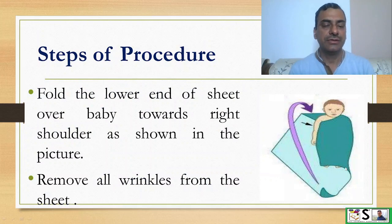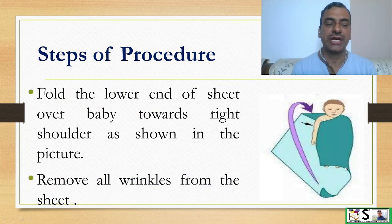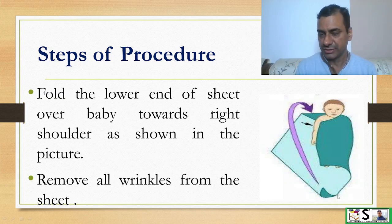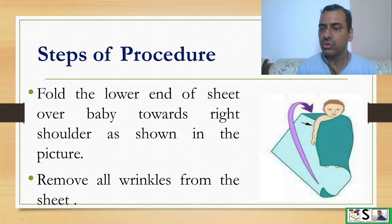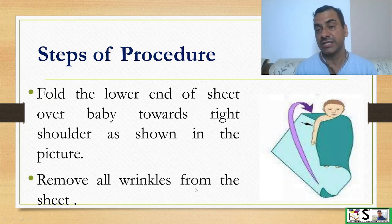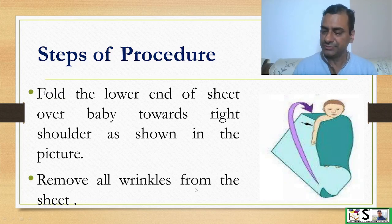Then fold the lower end of the sheet over the baby towards the right shoulder as shown in the picture. This end will go towards this side. Remove all the wrinkles from the sheet.